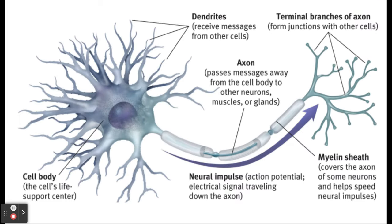Here is a picture of a neuron. You won't have to label a neuron on the quiz, but you do need to know certain parts. We have the cell body, which supports the cell. Then we have the dendrites, which receive messages from other cells. They travel down the axon, which is covered by the myelin sheath. The axon passes messages from the cell body to other neurons, muscles, or glands. The myelin sheath helps speed up neural impulses. An action potential sends it — and remember, this is an all-or-nothing response. It either hits that threshold and the message is sent, or it doesn't.